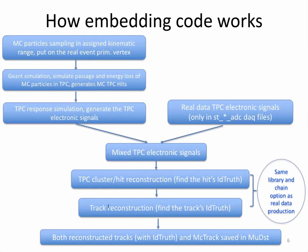The tracking software takes over and performs track reconstruction and track finding. During this stage, the track finding algorithm also tries to find the reconstructed track's id_truth, which is the Monte Carlo correspondence for the reconstructed track. After tracking, we don't do vertexing in embedding — the vertex is taken from the real data event primary vertex. All reconstructed tracks with id_truth and the Monte Carlo tracks are saved in the MuDST files for user analysis.